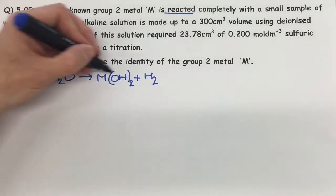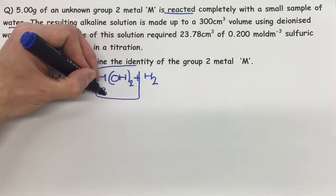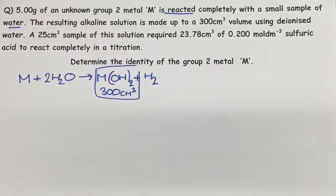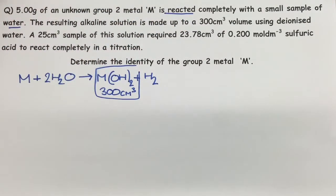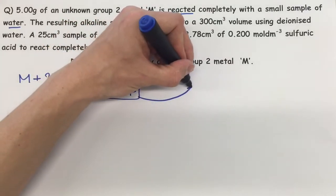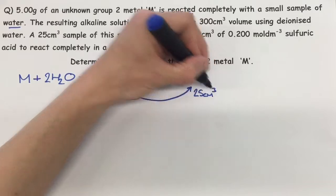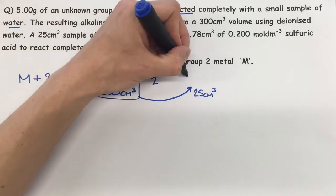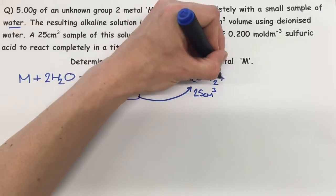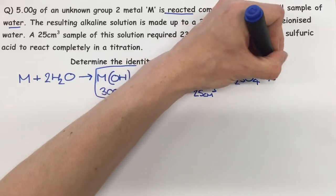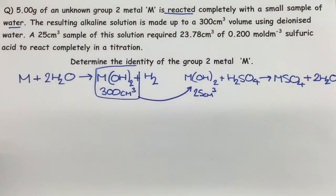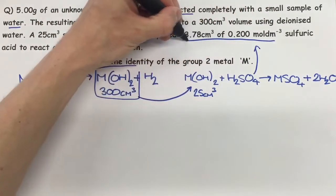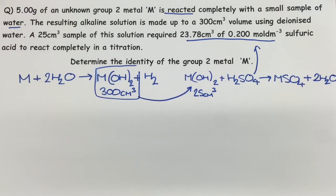It's made up to a 300 cm³ volume. A 25 cm³ sample of this solution required 23.78 cm³ of 0.2 mol per decimetre cubed sulfuric acid. So we take a 25 cm³ portion of that 300 cm³ solution and react it with sulfuric acid. M(OH)₂ reacting with H₂SO₄ gives MSO₄ and 2H₂O. We know the concentration and volume of H₂SO₄, and the identity of group 2 metal M can be deciphered from all this information.